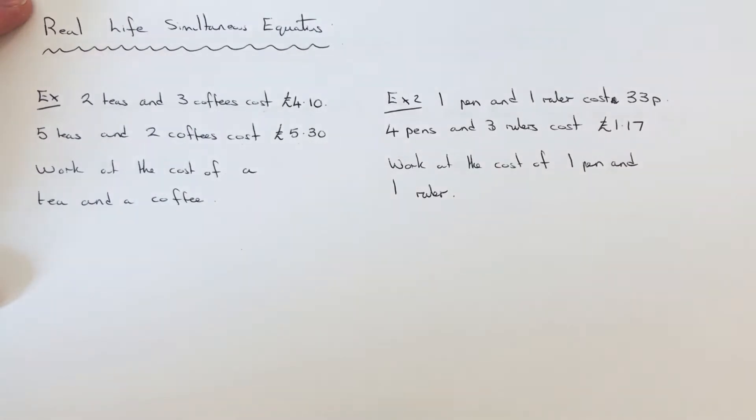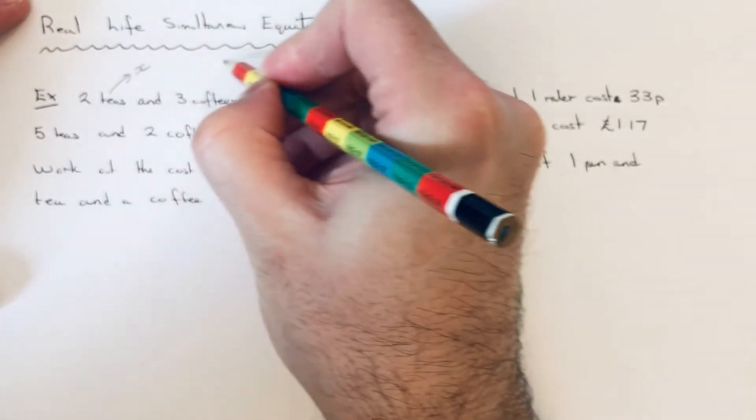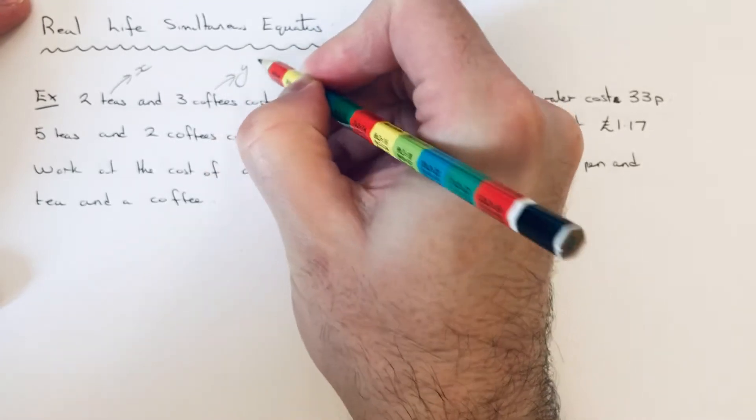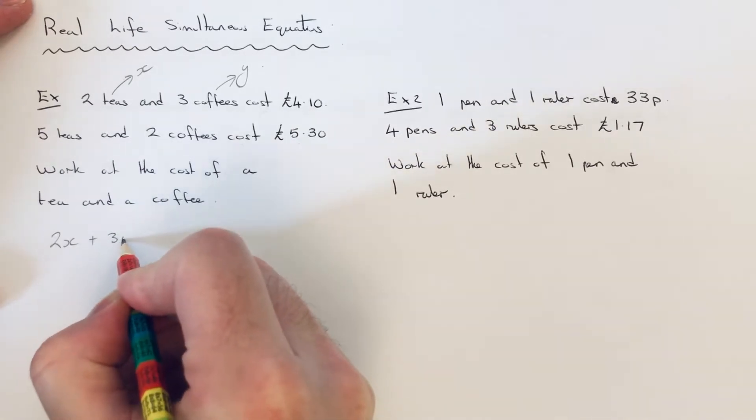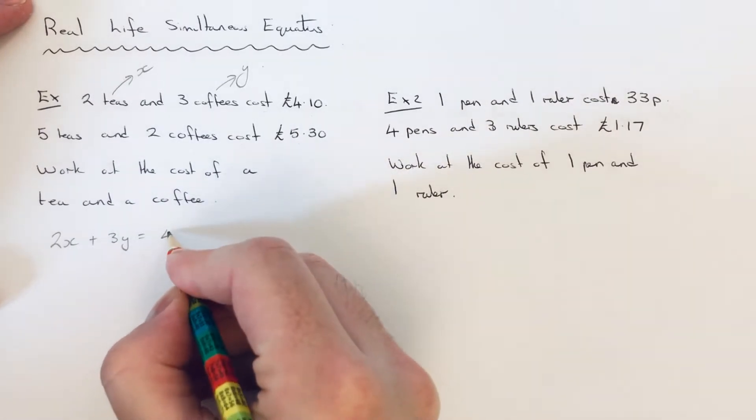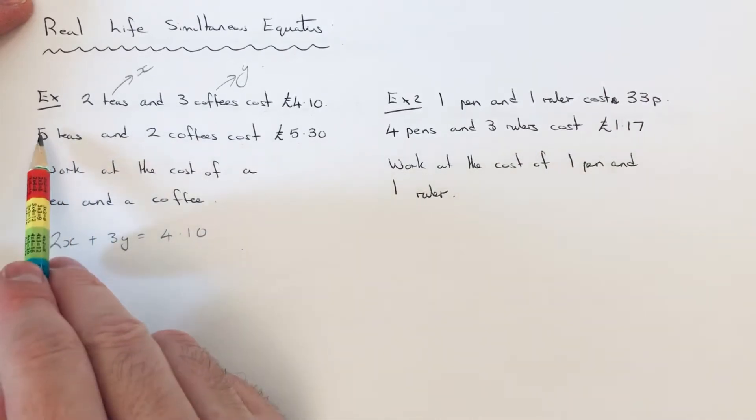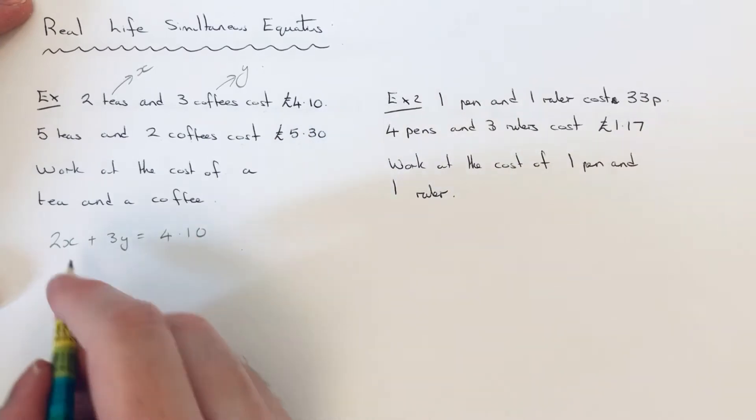The first step is to write down the two equations. So I'm going to call a cup of tea x and a cup of coffee y. So our first equation will be 2x plus 3y equals £4.10. And our second equation will be 5x plus 2y equals £5.30.